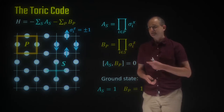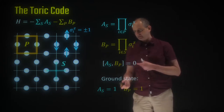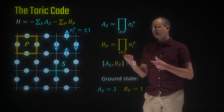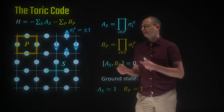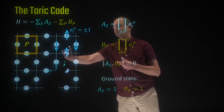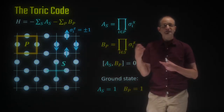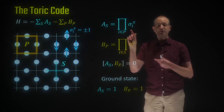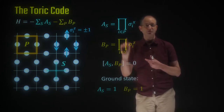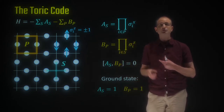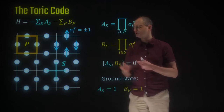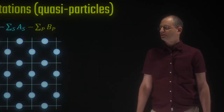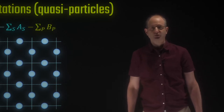Notice that A_s and B_p have well-defined values in the ground state, but if you look at an individual spin — like sigma_z — that does not commute with the Hamiltonian and does not have a well-defined value in the ground state. So that would actually fluctuate from up to down, and the same goes also for any sigma_x.